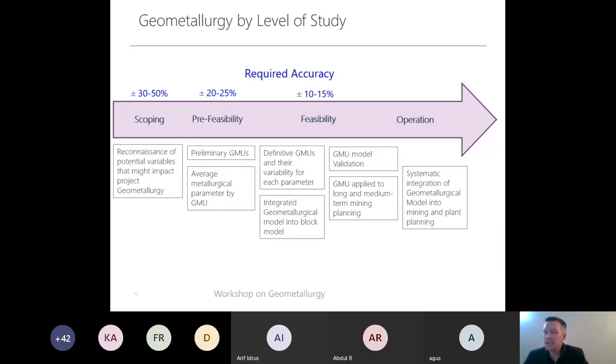Between the feasibility and the operation, we need to validate the geometallurgical unit with large samples and apply the geometallurgical unit to the long and medium term planning. Finally for the operation, it's important to integrate all this geometallurgical modeling to the short-term mine plant planning.